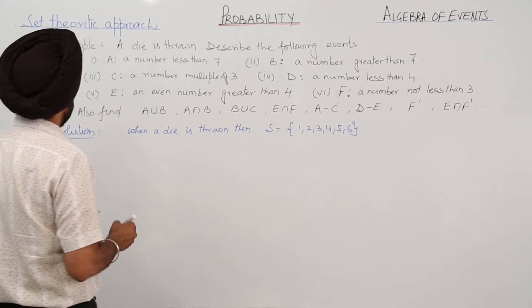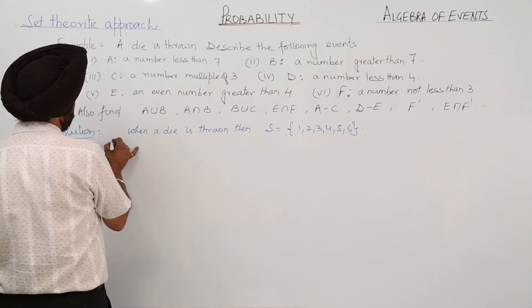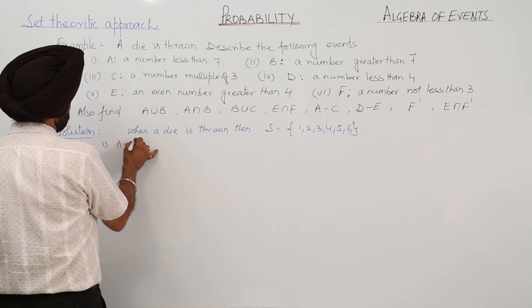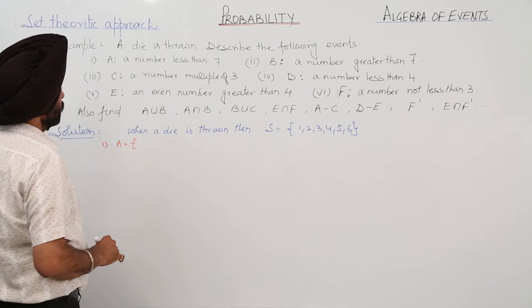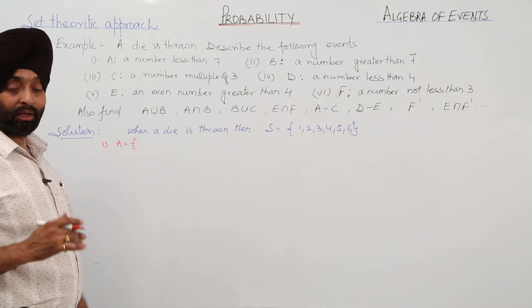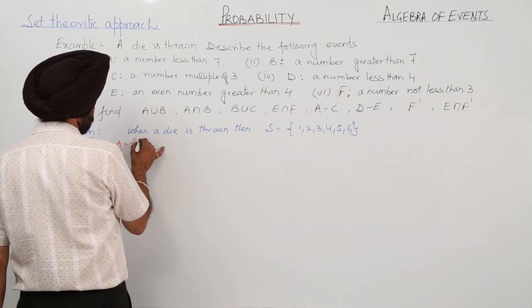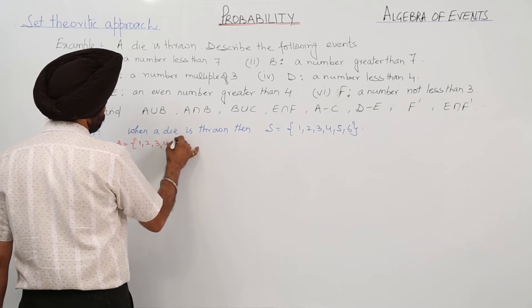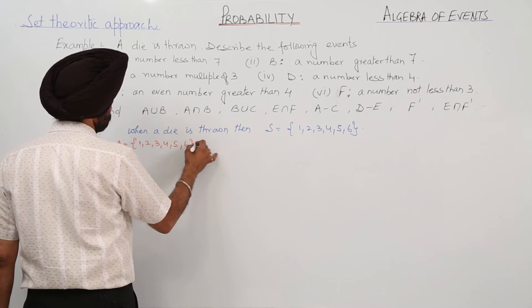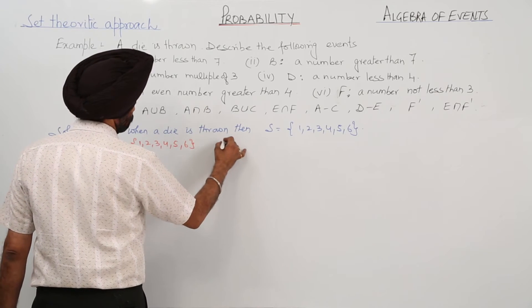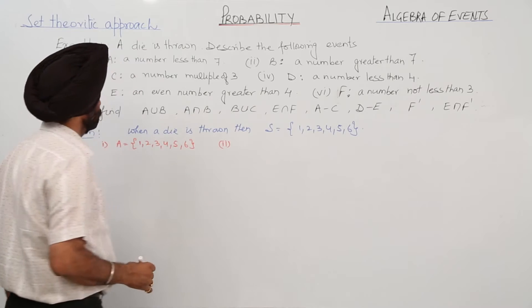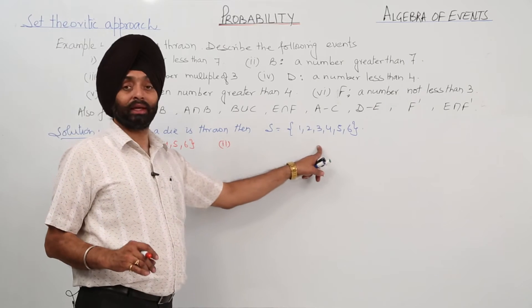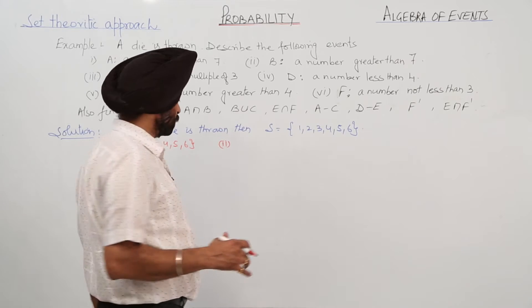Now, number 1: A is equal to a number less than 7, so it will be {1, 2, 3, 4, 5, 6}. Number 2: B is a number greater than 7, and we are not having any number which is greater than 7.